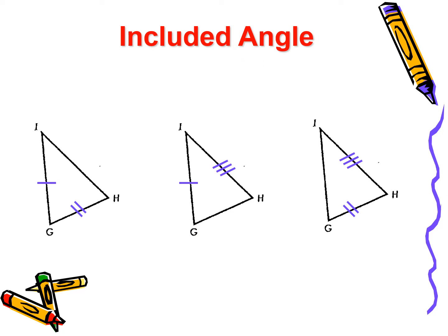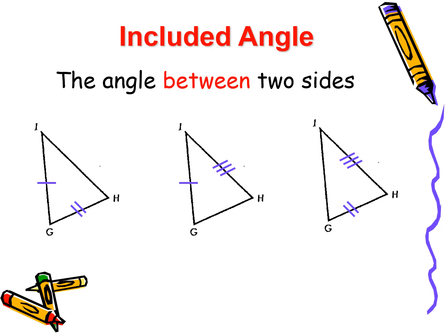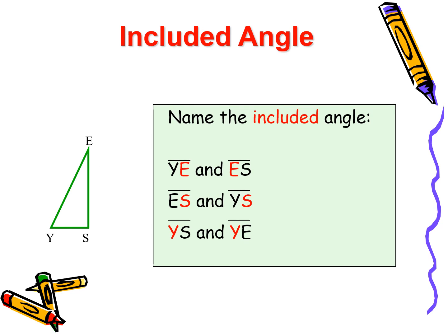What is an included angle? It is the angle between two sides. In the first diagram, the included angle is angle G. In the second diagram, the included angle is angle I. And in the third diagram, the included angle is angle H. Now, let us name the included angle. A technique: whatever letter is common to both sides is the included angle. So in YE and ES, we have angle E. In ES and YS, we have angle S. In YS and YE, it is angle Y.